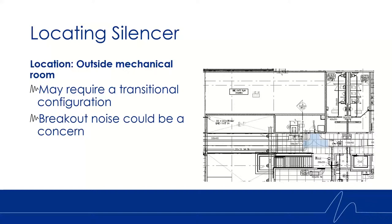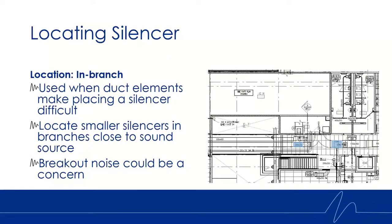If the inside of the mechanical room doesn't work, place the silencer on the outside of the mechanical room. Considerations include potentially needing a more custom silencer design based on ductwork layout, and breakout noise — since the silencer is now over an occupied space, a heavier gauge casing may be needed. Lastly, if neither location works, consider in-branch ductwork, where two smaller silencers can be used instead of one large custom one. However, the duct between the mechanical room and the silencers is untreated, so breakout noise remains a concern.